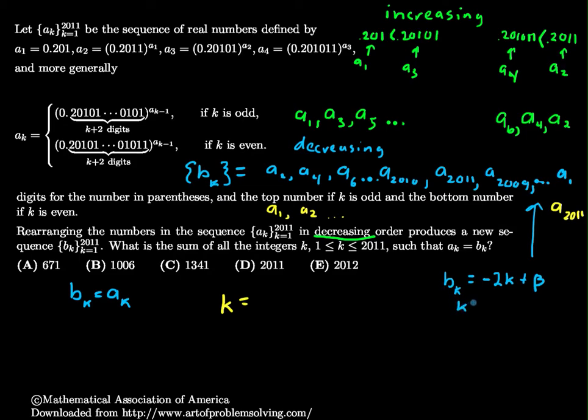And I know that b_2011, the last term here, 2011, is equal to a_1. So 1 has to equal negative 2 times 2011 plus my beta. And so beta will equal 4022, 4023.